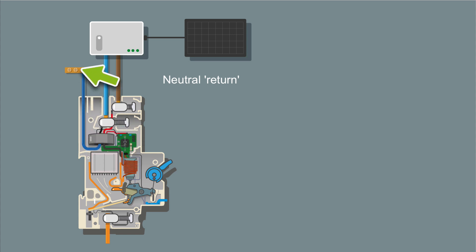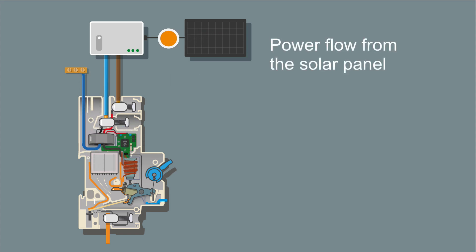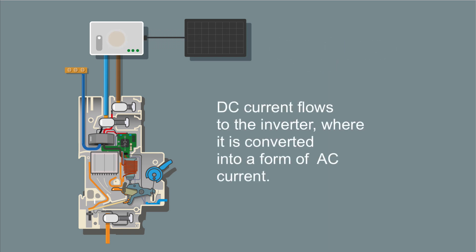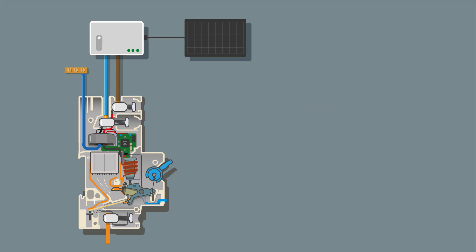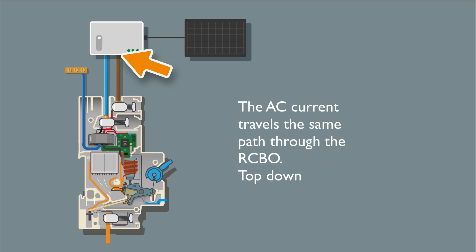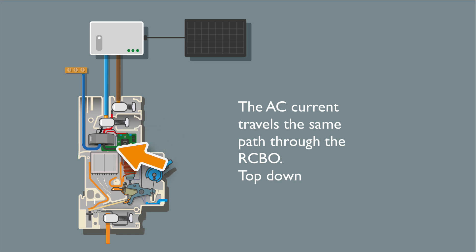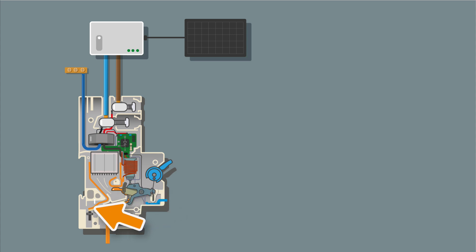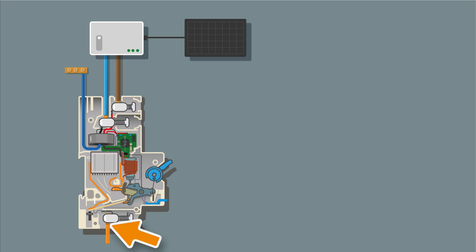And back to the neutral bar. Then we have DC current which flows from the solar panel to the inverter. This DC current is converted into a form of AC current, which returns back down the line connection, through the load connection, back through the toroid, through the solenoid, back onto the moving contact, in the operating mechanism, back down the thermal overload, and onto the bus bar connection. Exactly the same path — it's just doing it top down.